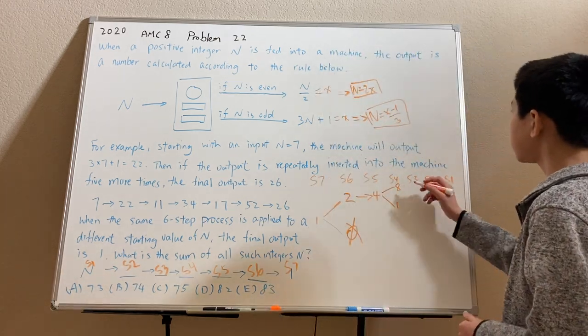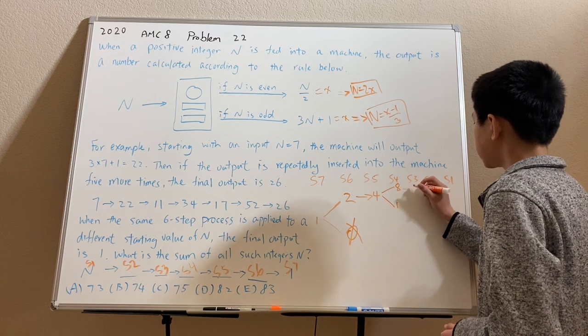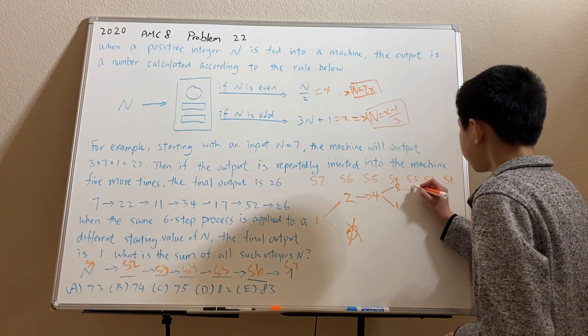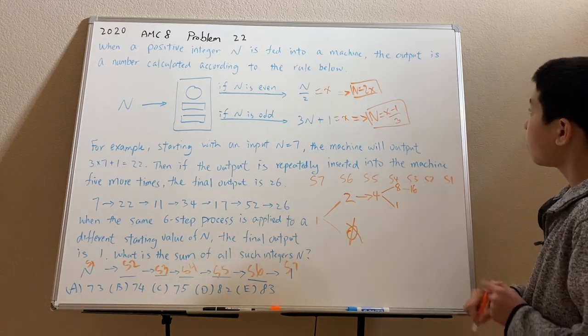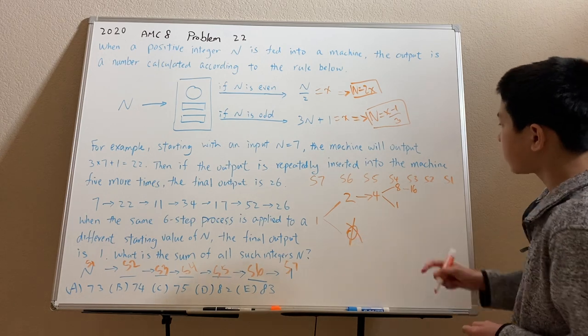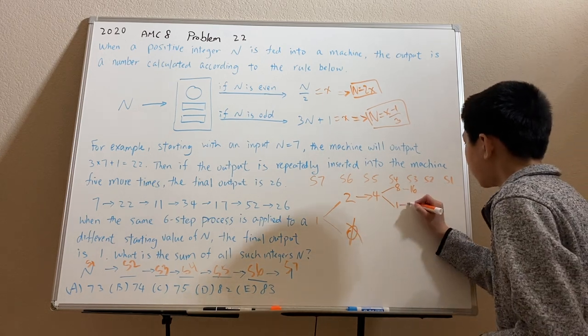And then we continue to stage 3. The only thing that will work is 16. And then for 1, well, we did it before in this case. The only thing that will work we know is 2.